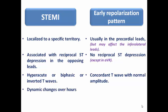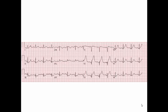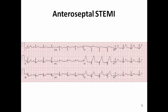In STEMI, dynamic changes occur over hours to days, whereas early repolarization is static — even identical after years. In STEMI, there is no notched J-point, whereas notching at the J-point (fish-hook pattern) is characteristic of early repolarization. Looking at this ECG example: the patient has ST elevation in precordial leads with reciprocal ST depression in inferior leads and hyperacute T-waves. The ST elevation is restricted to the anteroseptal leads V1-V4 — this is anteroseptal STEMI, not early repolarization pattern.